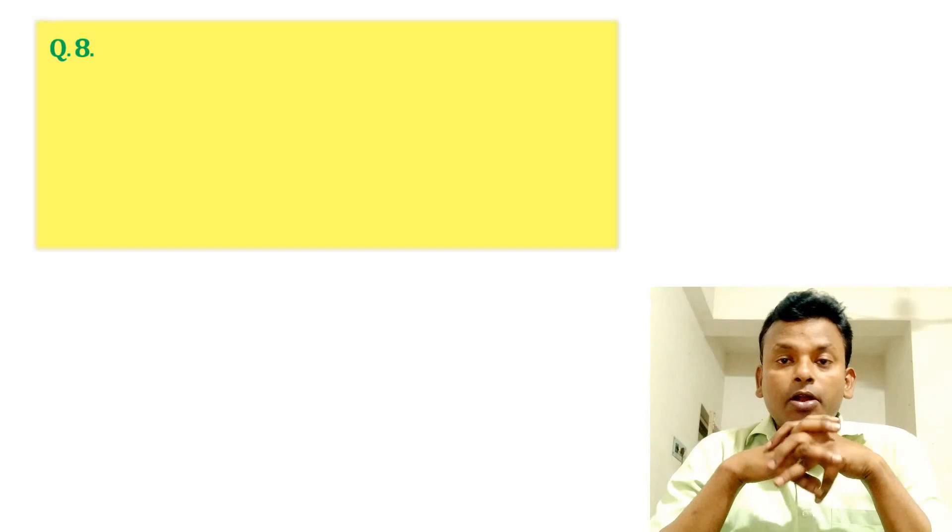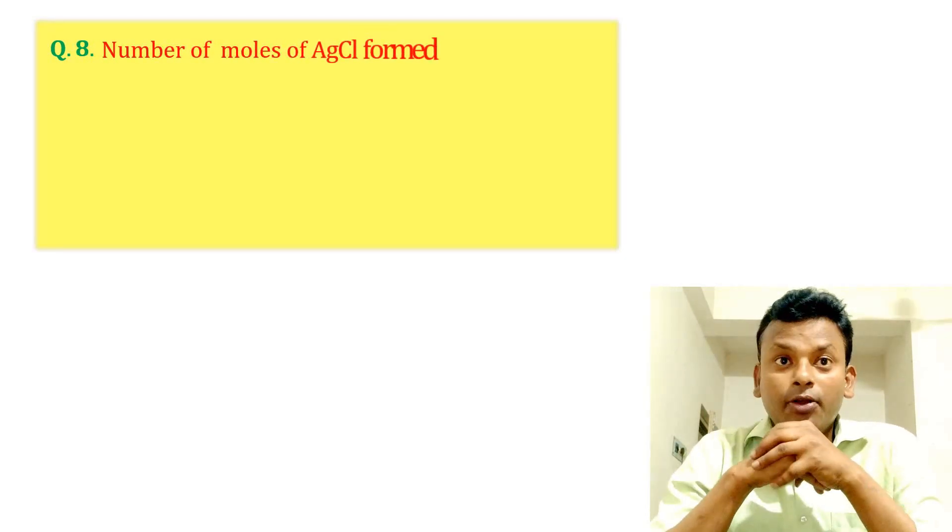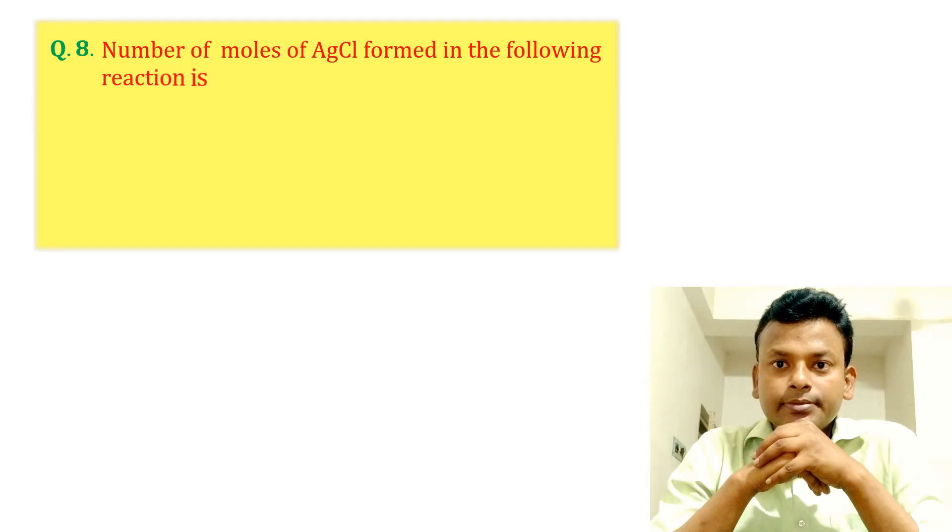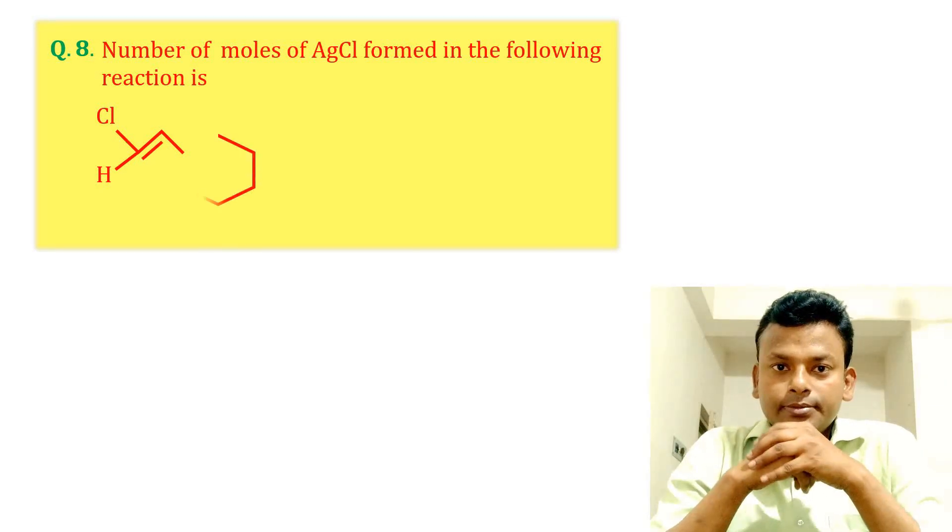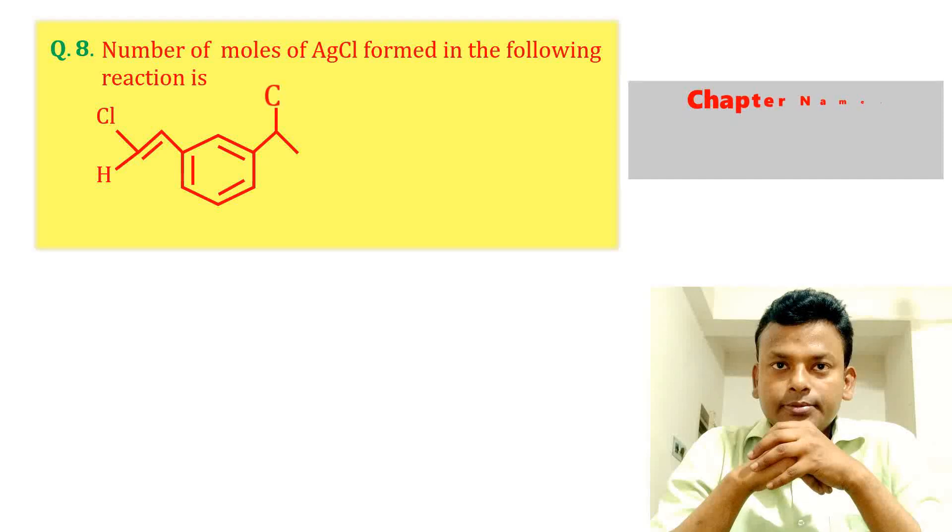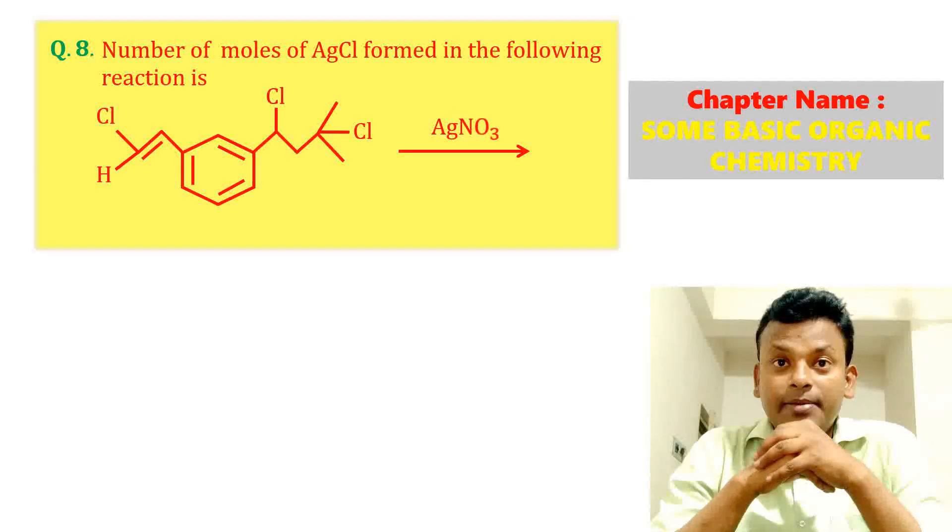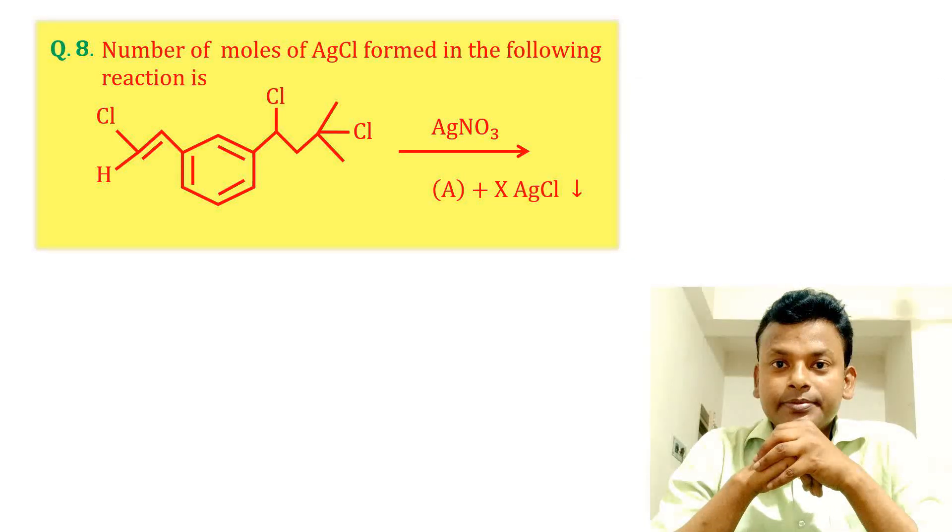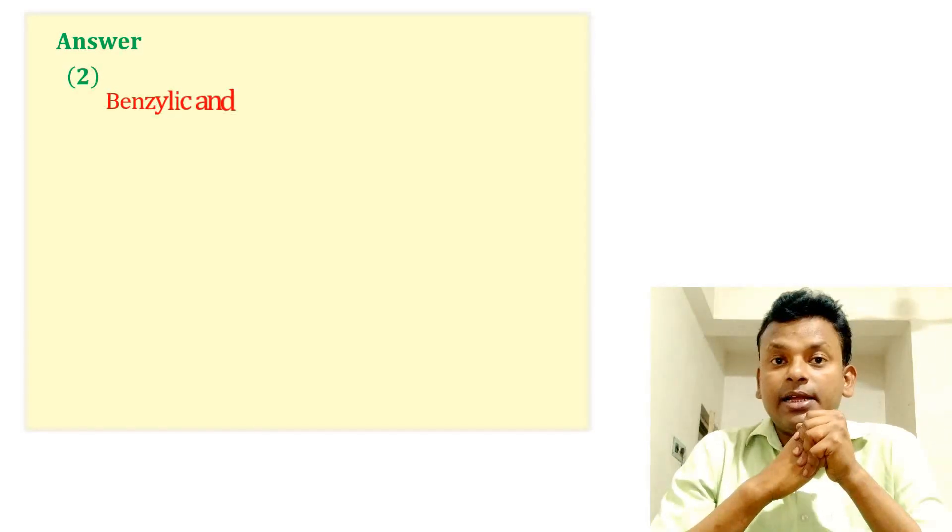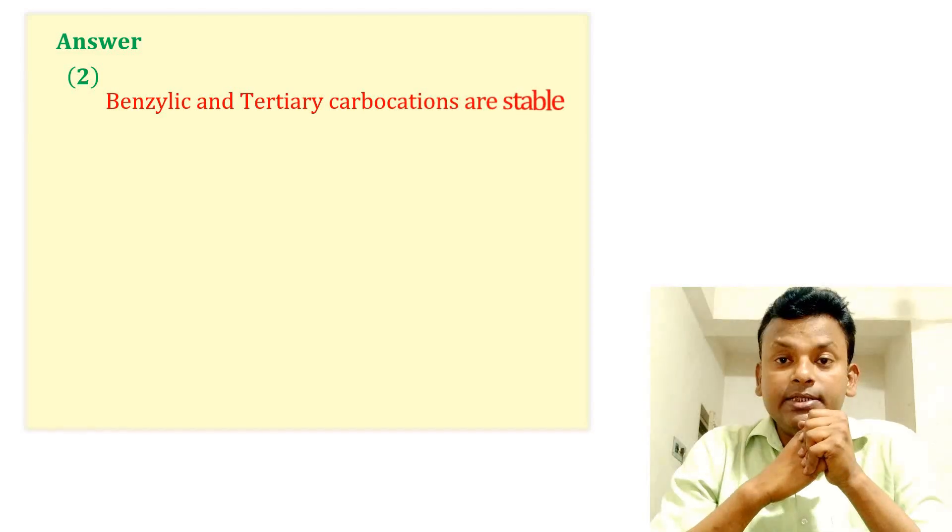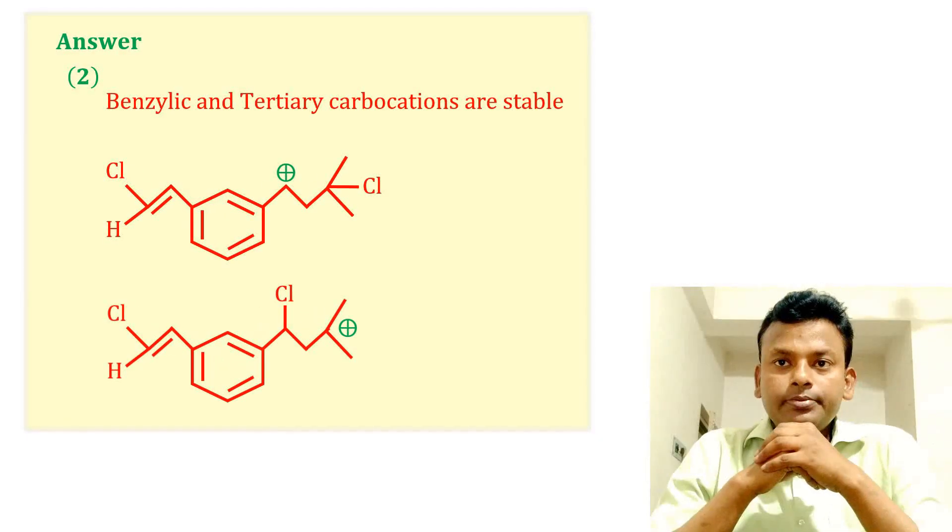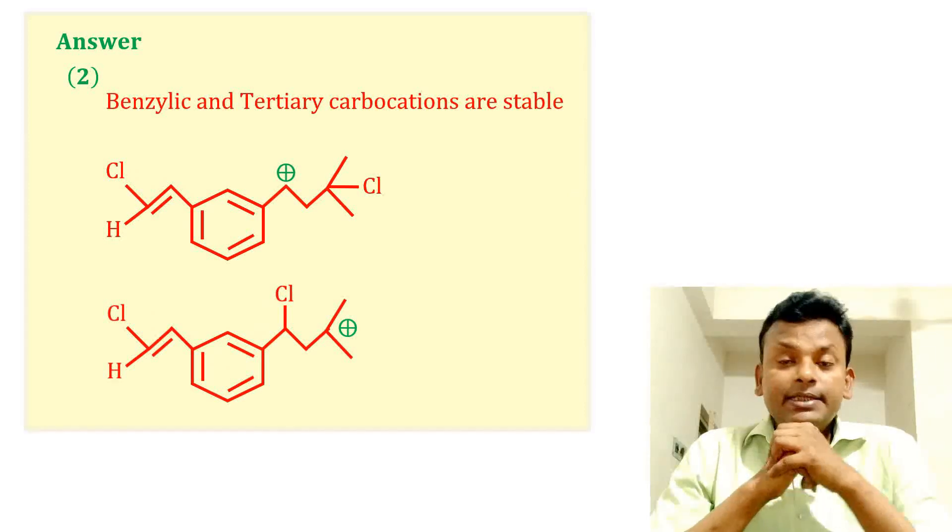Question 8: Number of moles of AgCl formed in the following reaction is shown. This compound reacts with AgNO3 to give Ag plus X AgCl. Answer is 2. Benzylic and tertiary carbocations are stable, so number of AgCl formed is 2. So 2 moles of AgCl are formed.